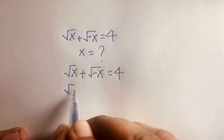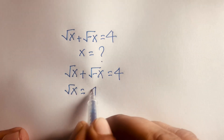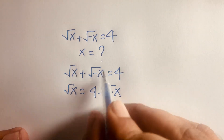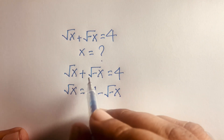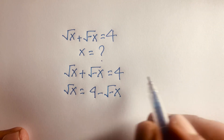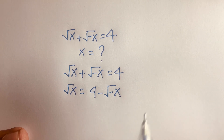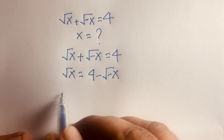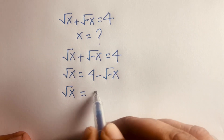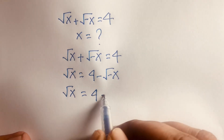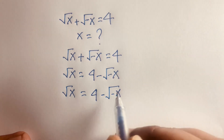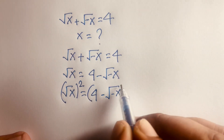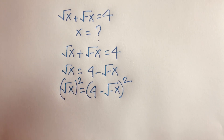Our equation is √x + √(−x) = 4. I move √(−x) to the right side, giving √x = 4 − √(−x). Then I apply a whole square to both sides.